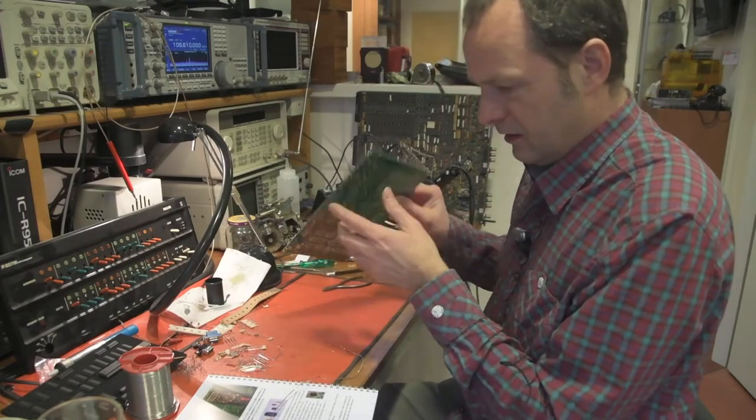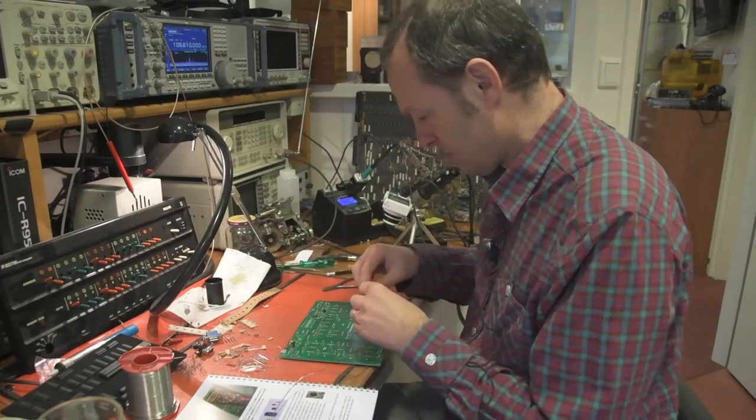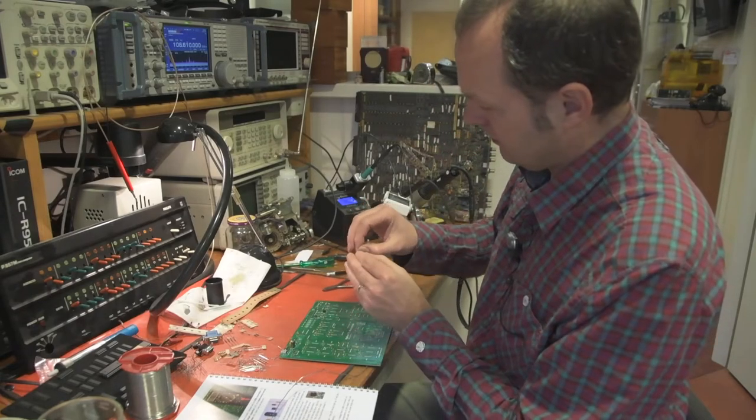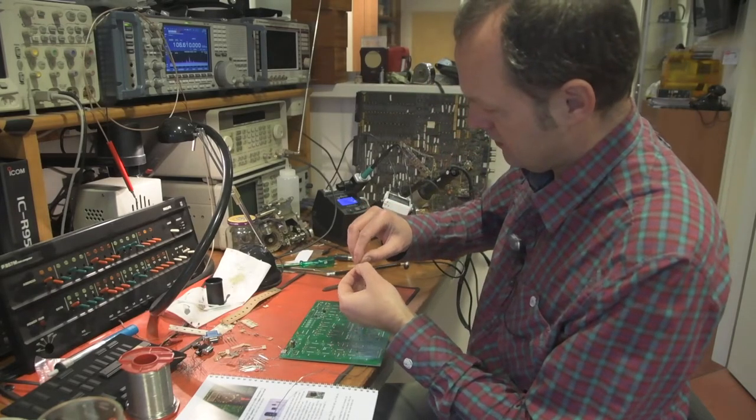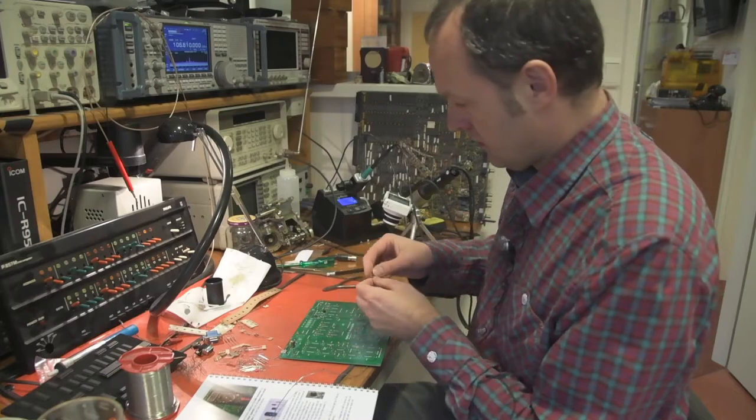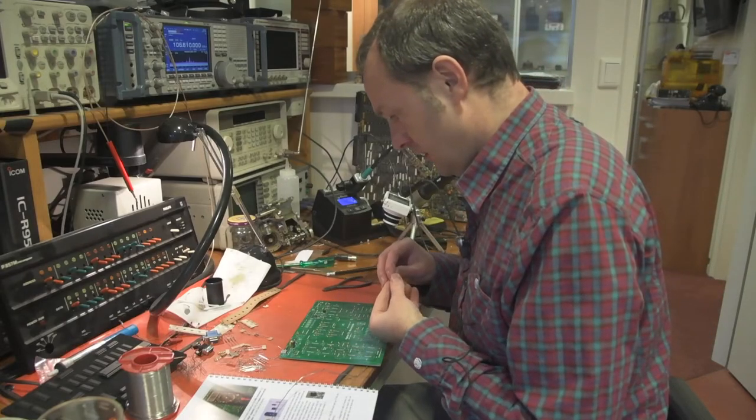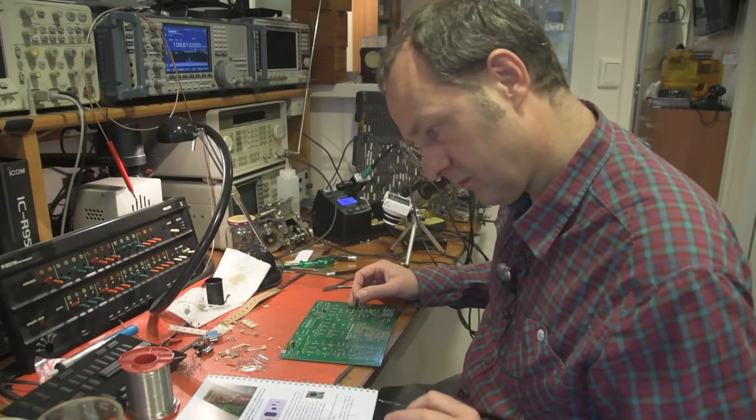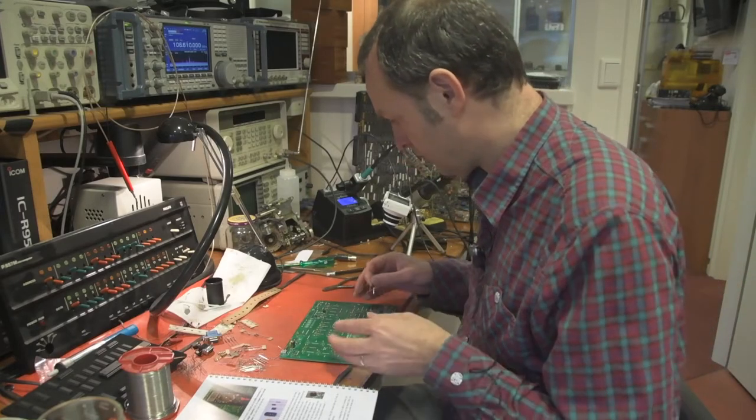And lastly we have a resistor. So again I use my fingernails to bend it. And this resistor is, I have to check, resistor R3.